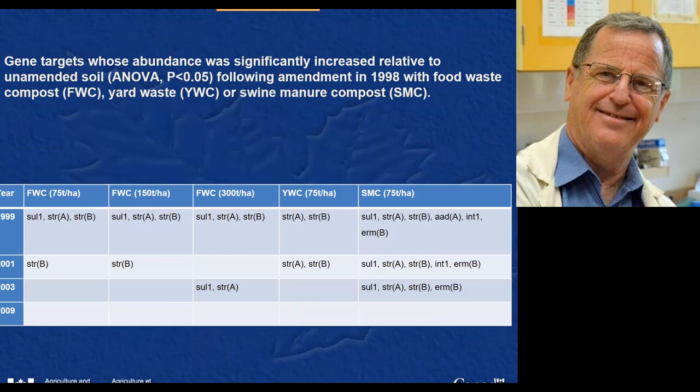This was a long-term experiment — materials were applied in 1998 and we took soil samples in 1999, 2001, 2003, and 2009, looking at roughly a decade of observation. The columns represent food waste compost at three application rates, yard waste compost, and swine manure compost. The designations SUL-1, STRA, etc., indicate genes increased in abundance relative to a control. In the year following application, all organic materials increased the abundance of some genes, with swine manure compost increasing more genes. Over time, the swine manure compost had those genes persisting more persistently.